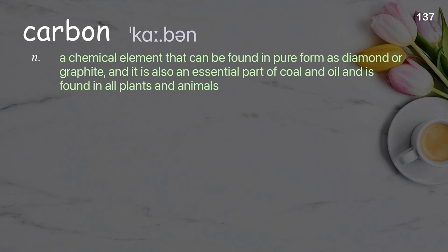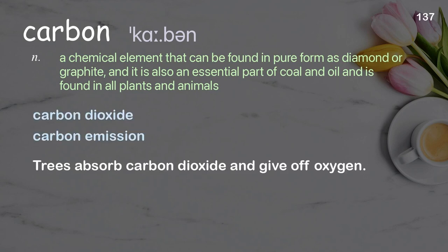Carbon: a chemical element that can be found in pure form as diamond or graphite, and it is also an essential part of coal and oil and is found in all plants and animals. Examples: carbon dioxide, carbon emission. Trees absorb carbon dioxide and give off oxygen.